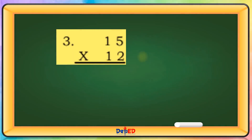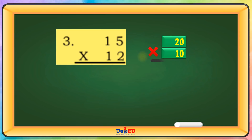15 will be rounded to 20. 12 will be rounded to 10. 20 times 10 equals — let's just copy the two zeros. And then multiply 1 times 2 equals 2. Two hundred is our product.